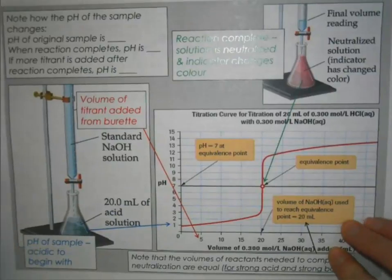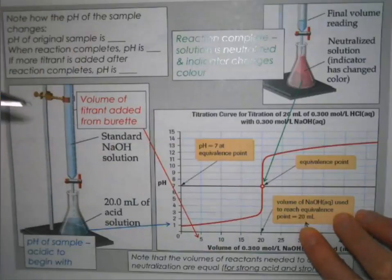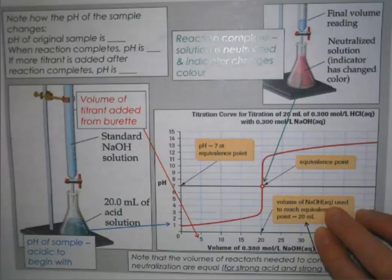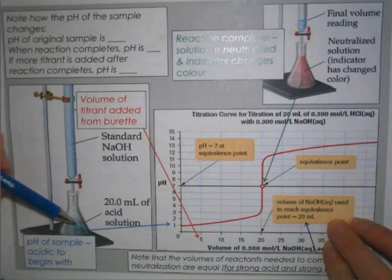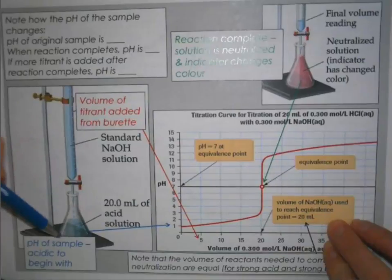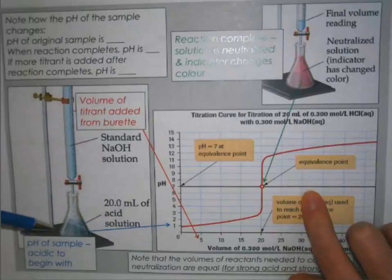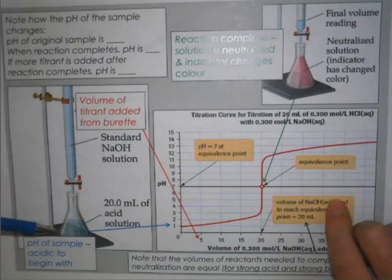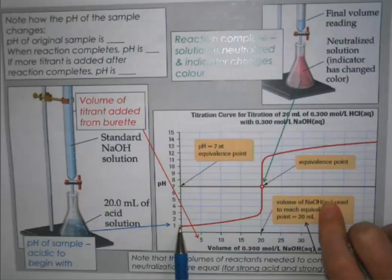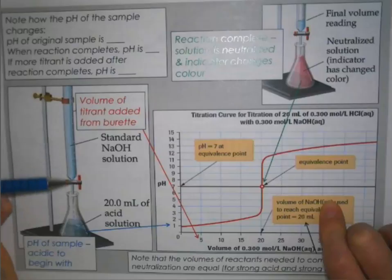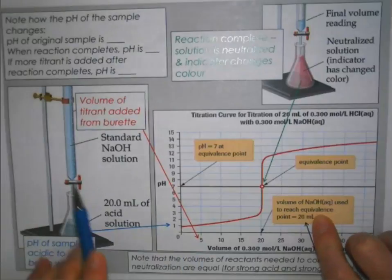Let's look at a specific example. In our burette we have our titrant, and in our Erlenmeyer flask we have our sample. We're starting out with an acidic sample — the graph is always measuring what's happening in the Erlenmeyer flask. If we think about the pH at the very beginning before adding any titrant, we just have this acid solution, which means our pH would be really low.